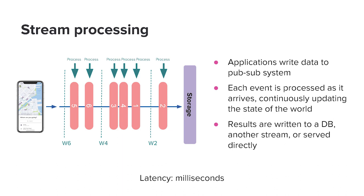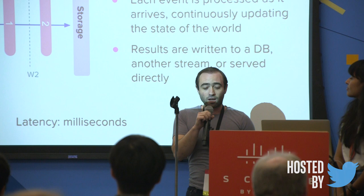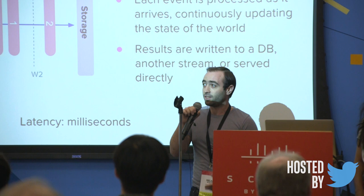Stream processing is a different way to compute things on data. Instead of collecting a whole lot of data and then every hour or every day doing some computation on it, as the data streams in we do computation on every single event. For every event that comes in, in real time, we are updating our current state of the world. For Lyft, this might mean deciding how many drivers and passengers there are in a particular part of the city to decide whether to turn on prime time, or deciding that a user is trying to defraud our system. All this stuff happens immediately, often at a time scale of milliseconds or seconds.